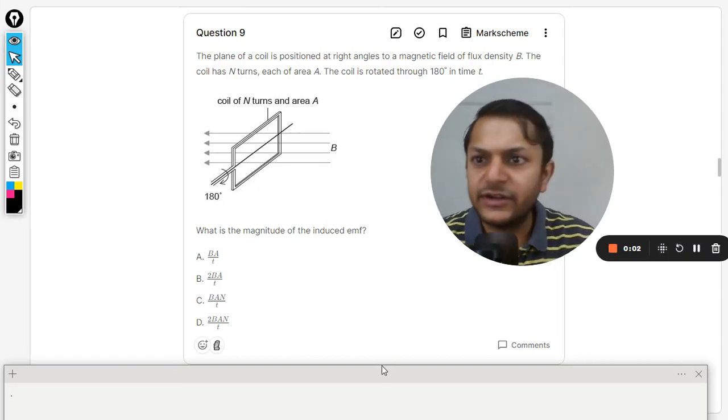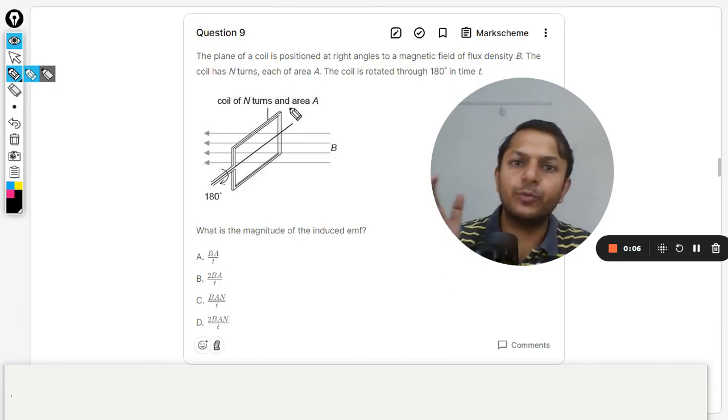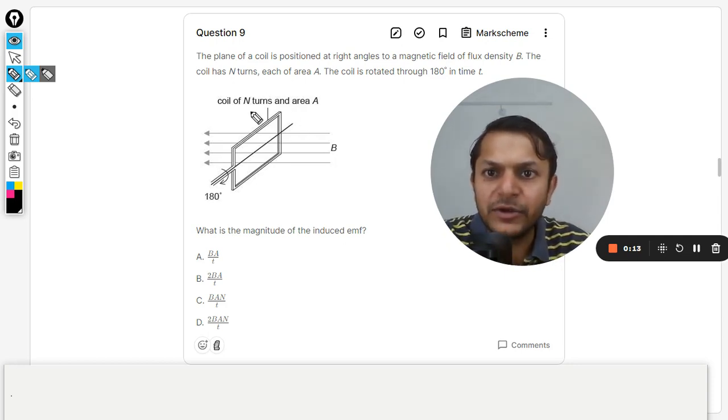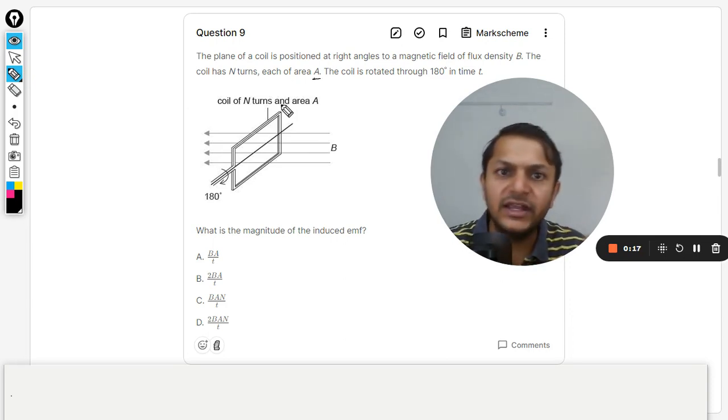Okay, dear students, let us see what is in this question. A plane of a coil is positioned at right angles to a magnetic field of flux density B. The coil has N number of turns and each of area A. The coil is rotated through 180 degrees in time t. What is the magnitude of the induced EMF?